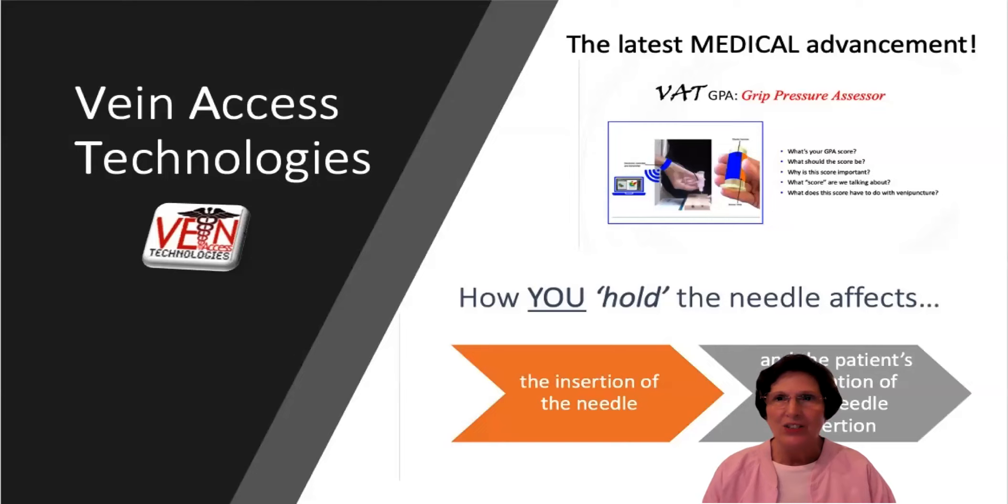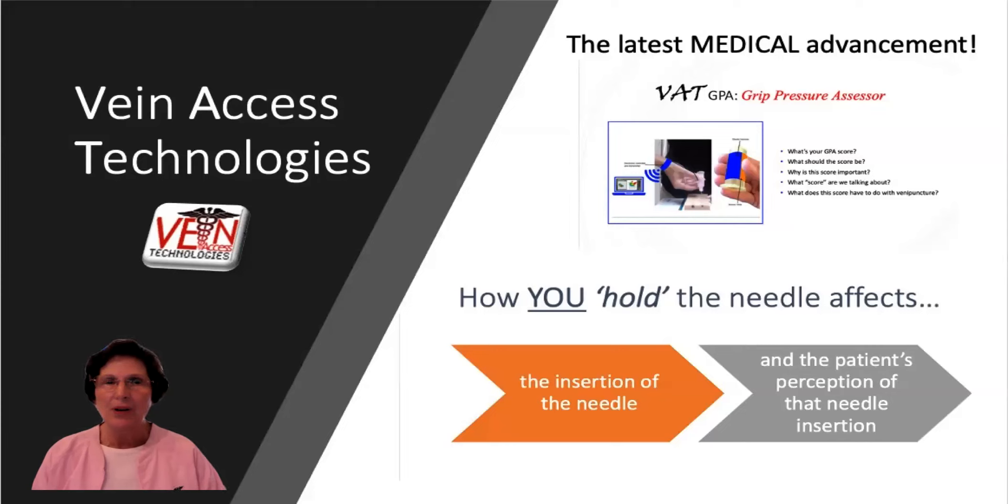So this Grip Pressure Assessor is the latest medical advancement in venipuncture. You have sensors on the adapter sending signals to the receiver, sending signals to the computer, which tells us what the pressures are. This tool and this concept of measuring grip pressure is the latest medical advancement in venipuncture.